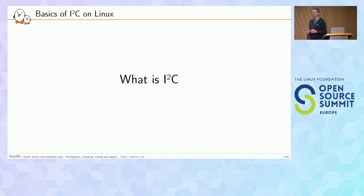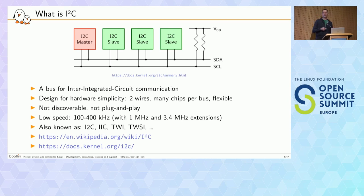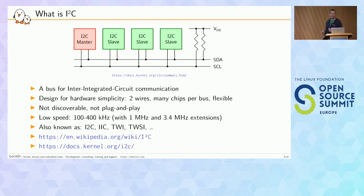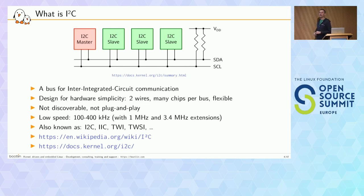Let me briefly introduce what I2C is. I2C is a communication protocol meant for communication between integrated circuits on a board, on a PCB typically, over short distance. It is designed to be very simple to implement in hardware. It has only two wires, and on those two wires many chips can communicate. It is not discoverable, no plug-in. It doesn't have many advanced features, but it's very popular because it is very effective. It is pretty low speed, usually 100 or 400 kilohertz. You can also find it named with different acronyms depending on the vendor: I2C, IIC, TWIE, and so on. But it's basically always the same thing.